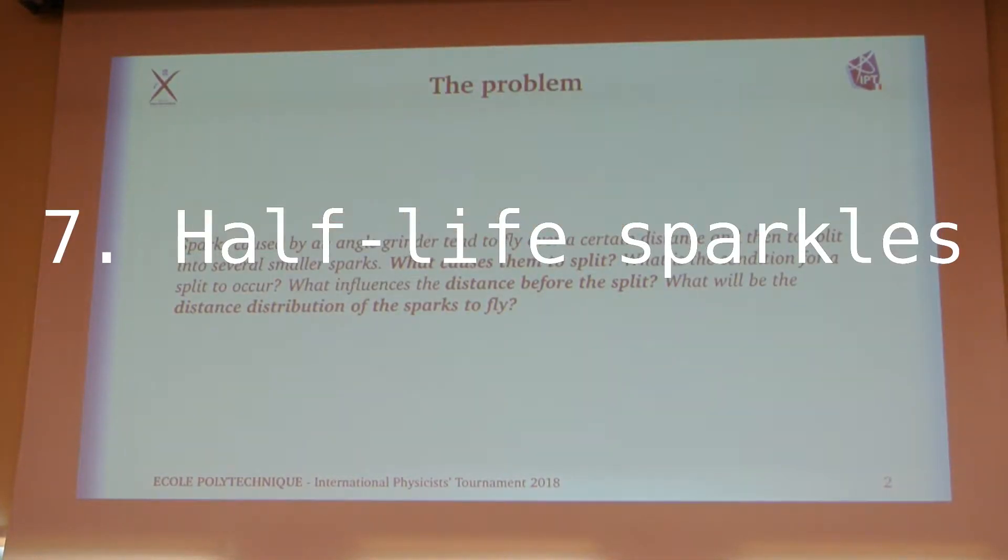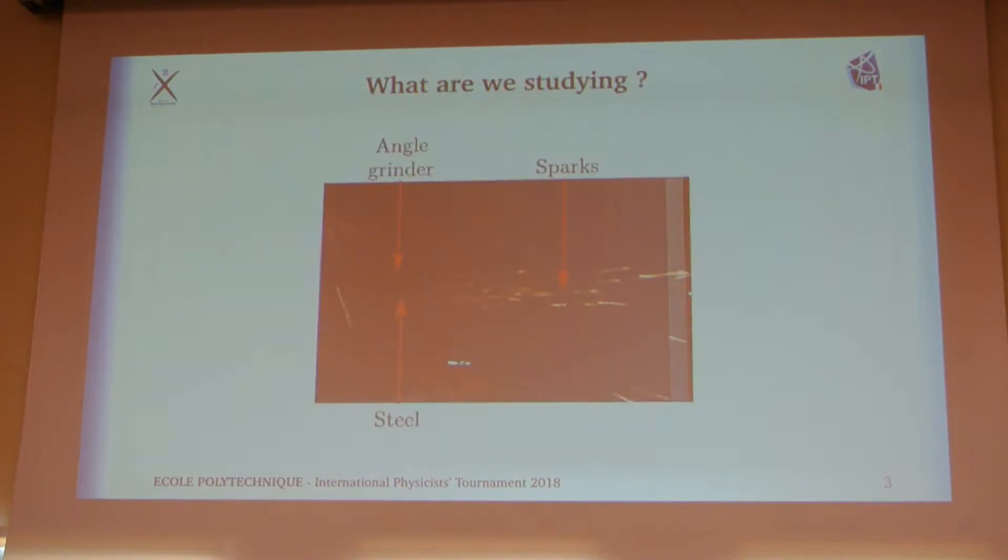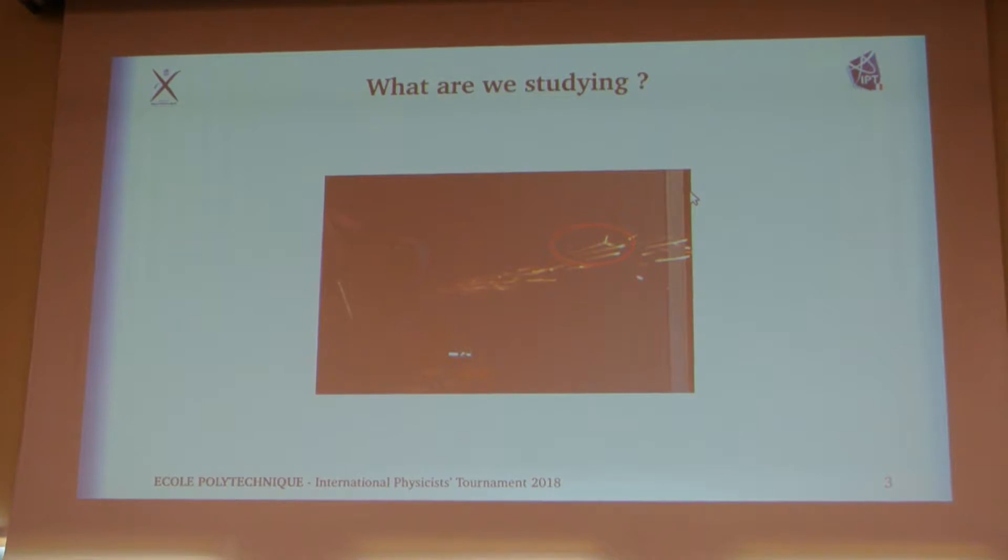This is the statement of the problem. The idea is that when you apply an angle grinder on regular steel, it produces sparks. These sparks sometimes split, as we can see in this picture, creating little forks that we can see with the naked eye. The question is to study why does this split occur and to find some properties of the distribution of the length that they travel before splitting.